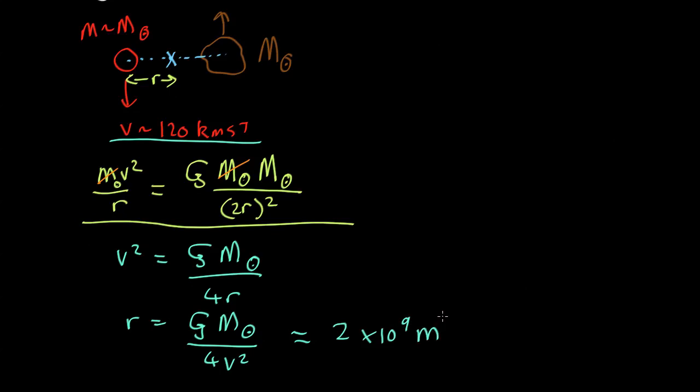Now that's a very interesting number. The radius of the sun is about 6 by 10 to the 8 meters, so that's only about 3 times the radius of the sun. And red stars are bigger than the sun. So that's telling us that the star and this gas cloud are actually very close together. If you're sitting on the surface of the gas cloud the star will cover like half the sky almost.